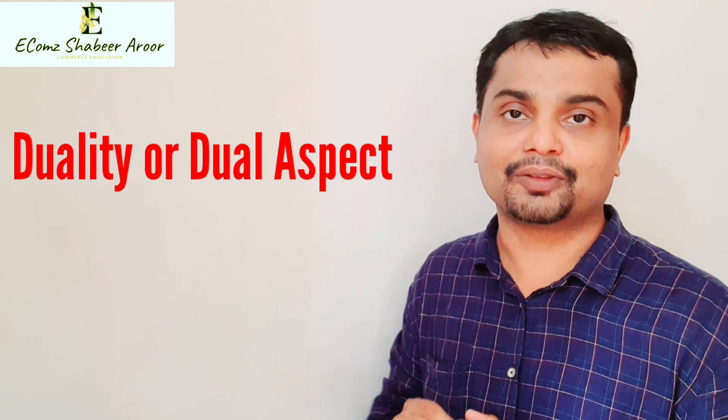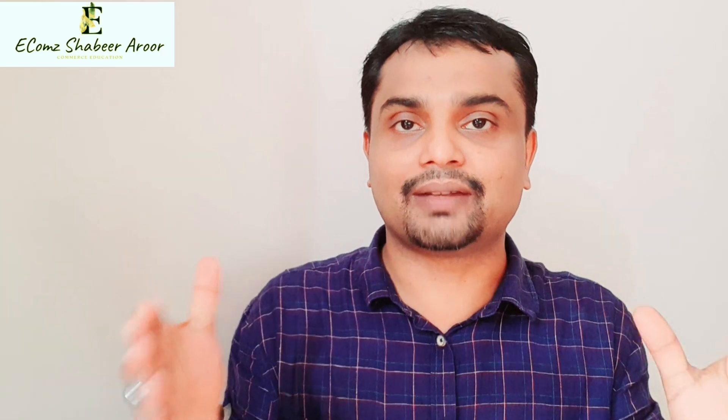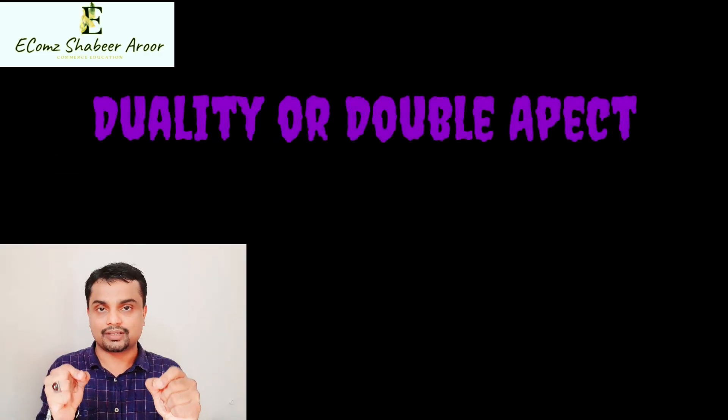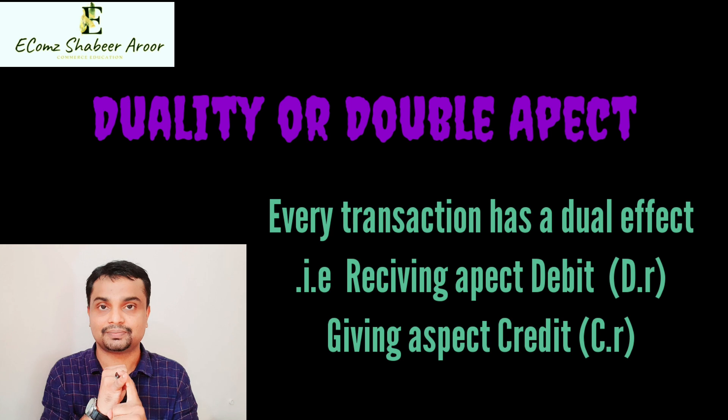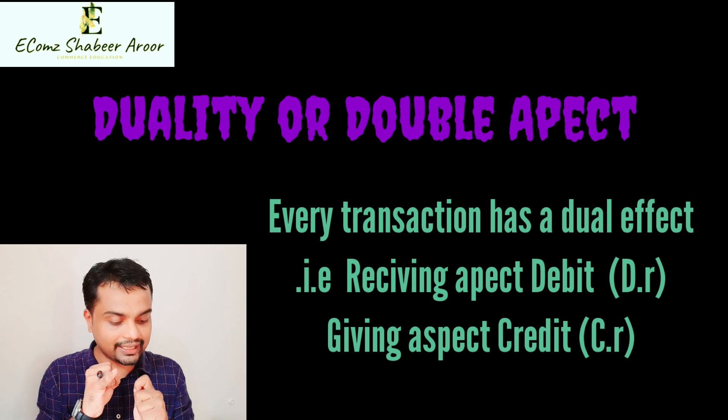The next is the duality concept, also called the dual aspect principle. According to this concept, every transaction will have two aspects. One aspect is the receiving aspect, which is called debit, and the other is the giving aspect, which is called credit.